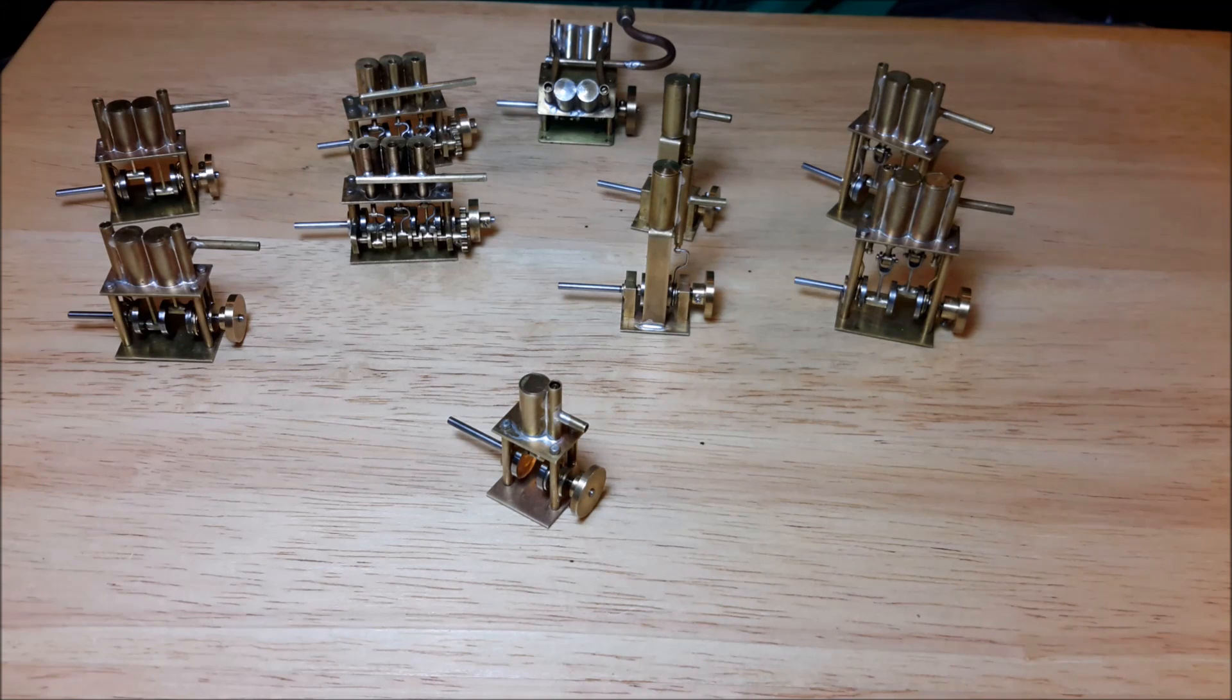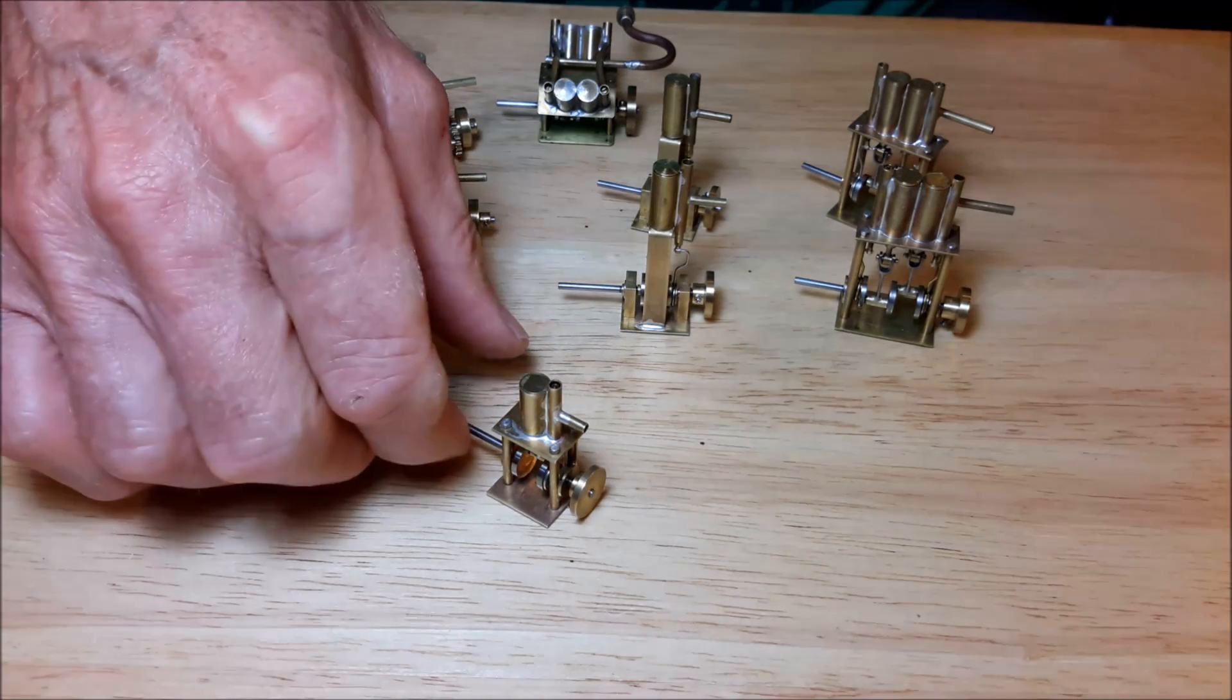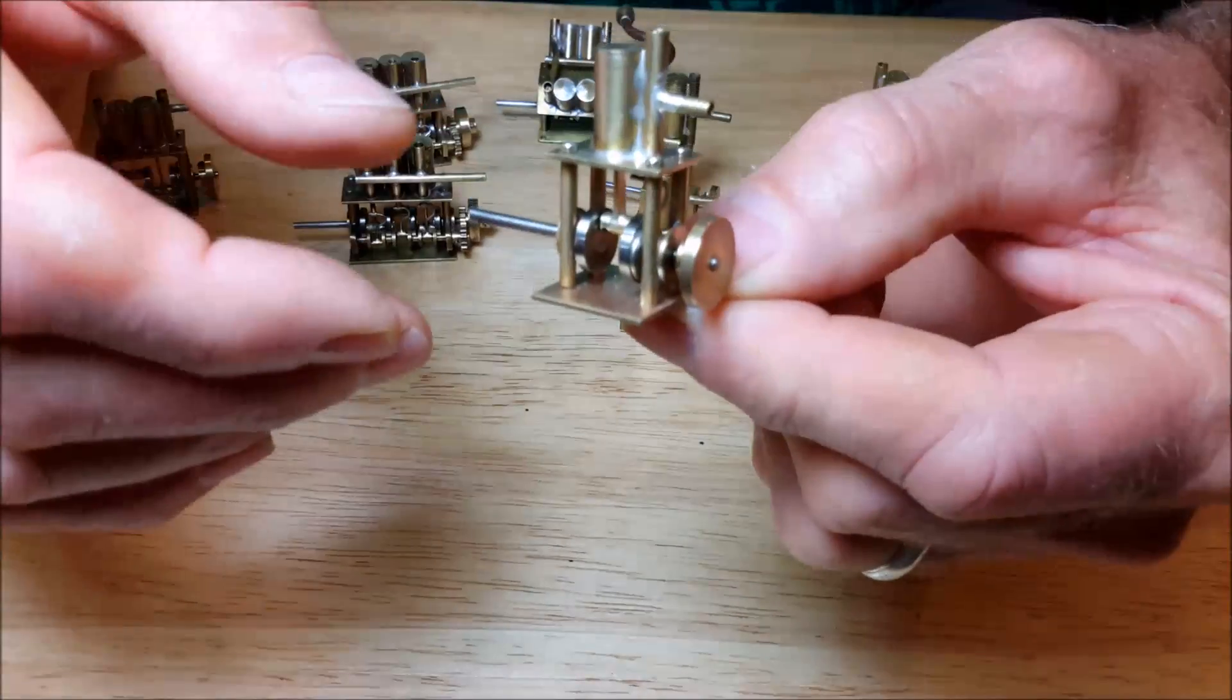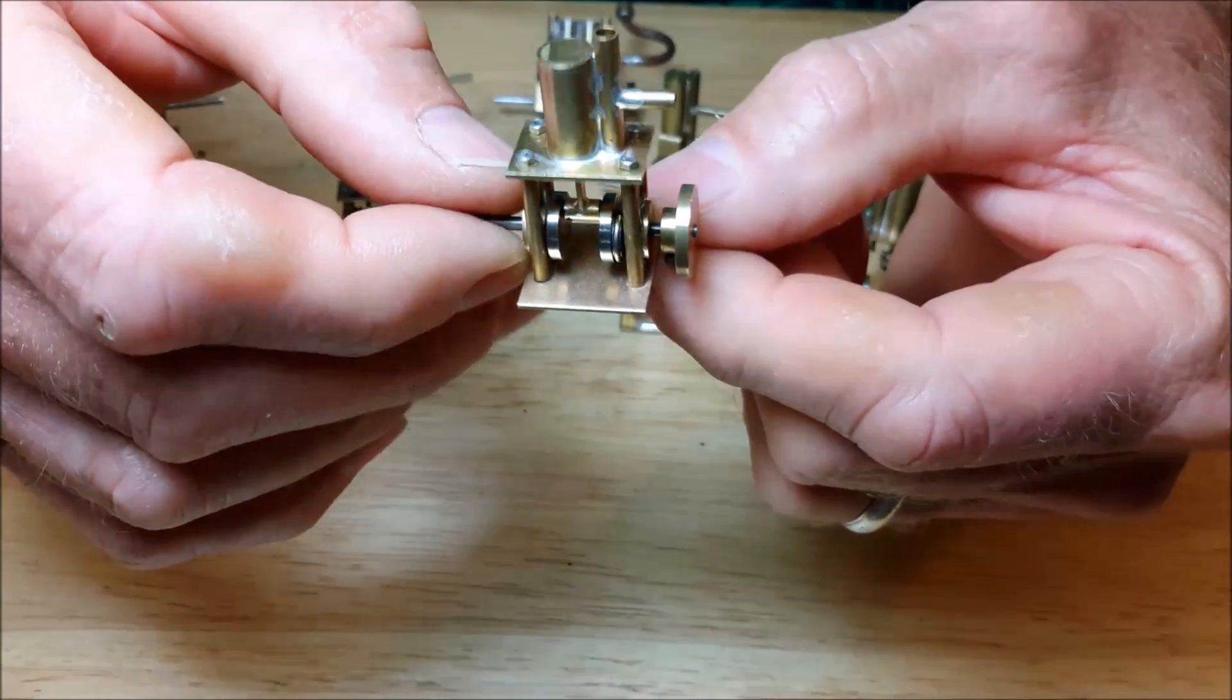These steam engines are the same ones that are used in my miniature model steamboat book and there are six of them. I'll start out with the smallest, this is the engine that's in the little tugboat which is only about 10 inches long.